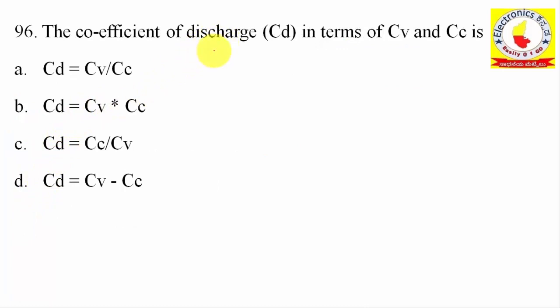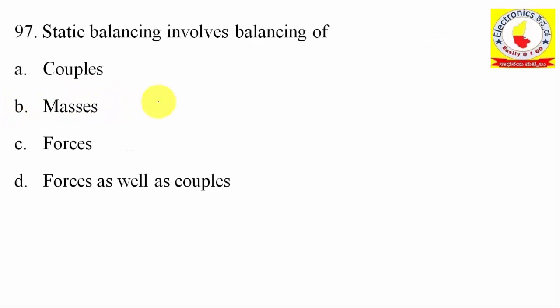96th question: The coefficient of discharge Cd in terms of Cv and Cc is given by Cd = Cv × Cc. Option B. 97th question: Static balancing involves balancing of — couples, masses, forces, or forces and couples? The answer is masses. Option B.